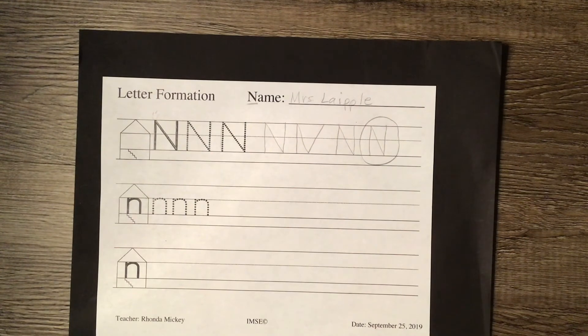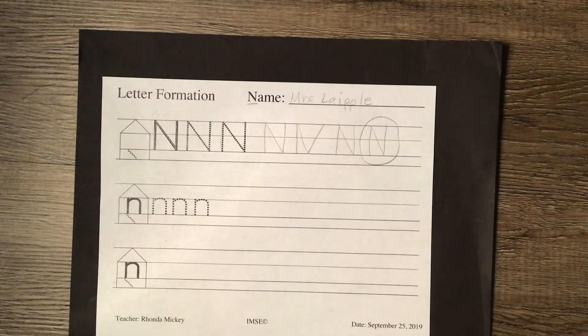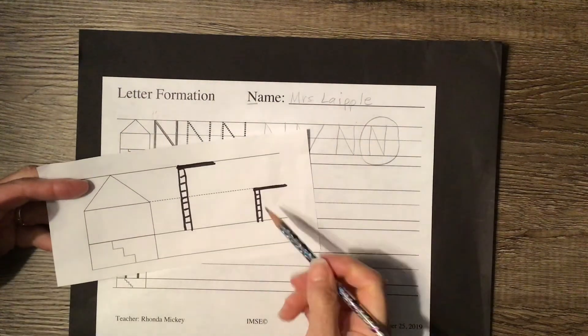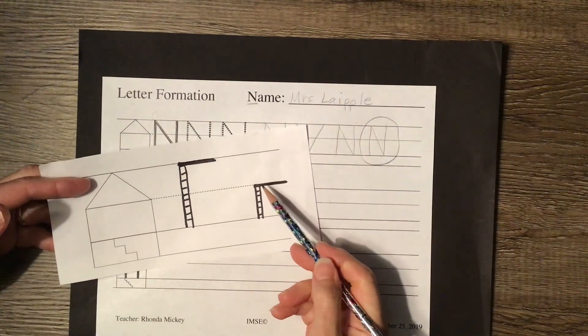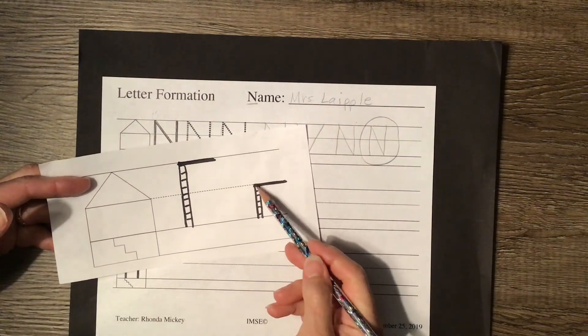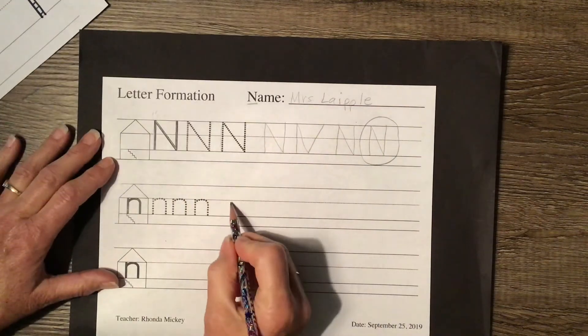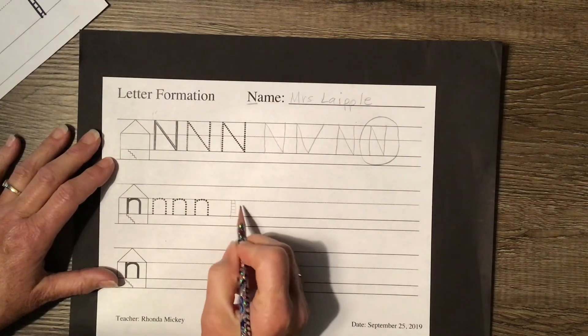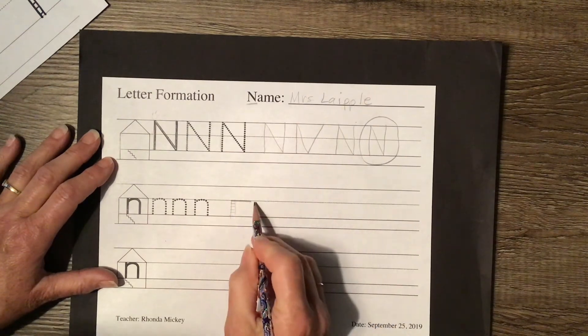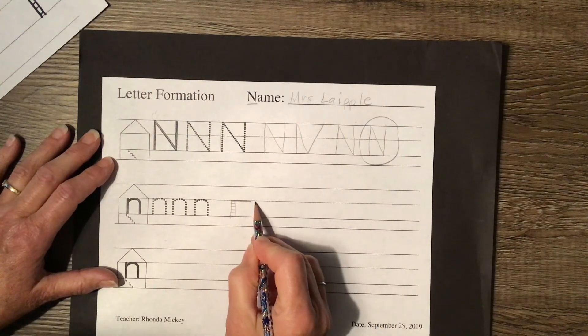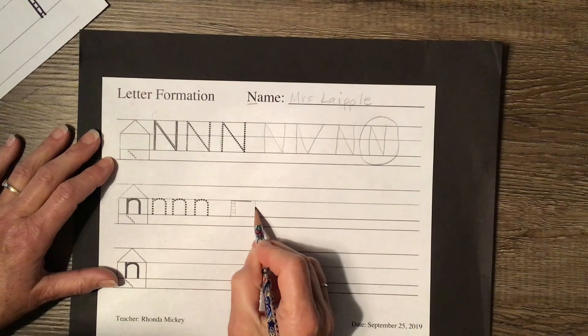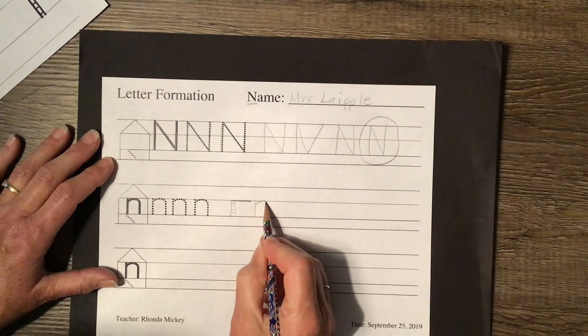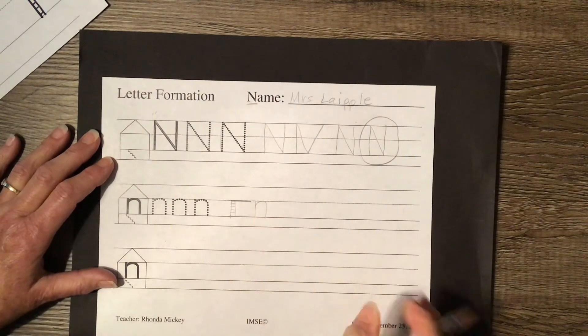Now while uppercase N was tricky, lowercase N should be pretty easy because guess what it is? It is a swimming ladder low dive. It's a low dive and I'm going to draw my ladder, my diving board. It's going to dive down, swim up over, get a breath, back down and bump.